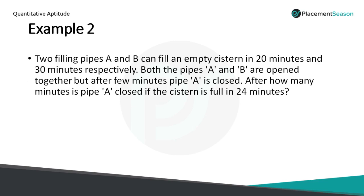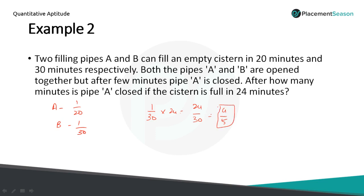A's 1-minute work is 1 by 20, B's 1-minute work is 1 by 30. Since pipe A is closed after some minutes, pipe B is working for the entire 24 minutes. B's 1-minute work is 1 by 30, and it works for 24 minutes, so 24 by 30 simplifies to 4 by 5. So 4 by 5 part of the work is done by B in 24 minutes.